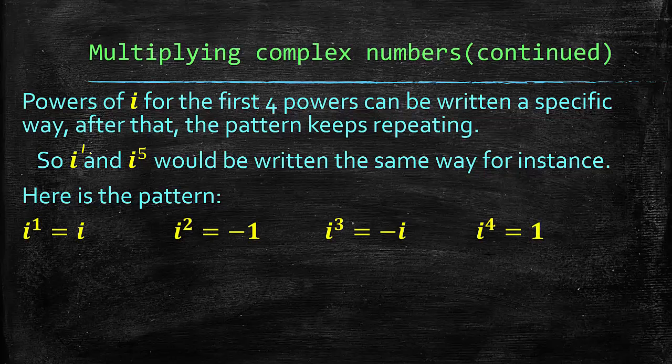So here's the pattern. i to the 1st power, that's just i. i squared is negative 1, because remember I said that i is the square root of negative 1. So if you have the square root of negative 1 times the square root of negative 1, you get rid of that square root and you're left with just negative 1. i to the 3rd power is negative i.